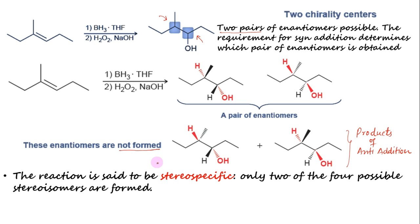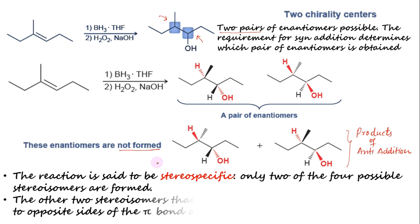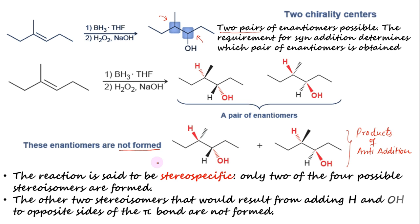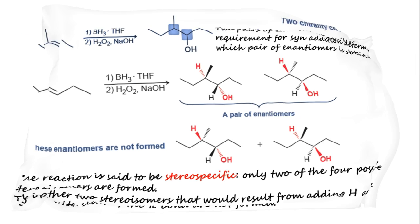The other two stereoisomers, which would result from adding H and OH to opposite sides of the pi bond, are not formed.